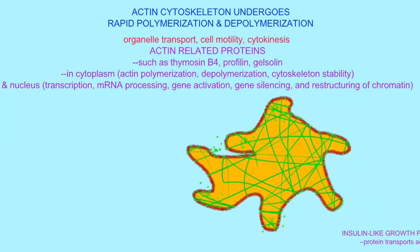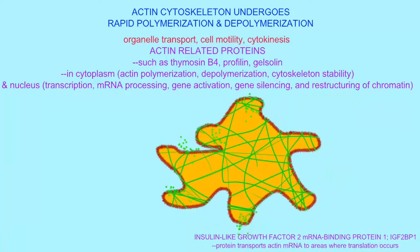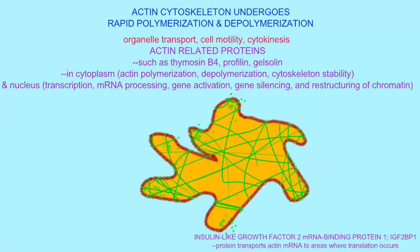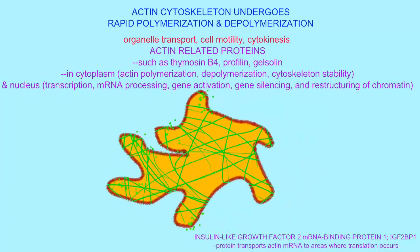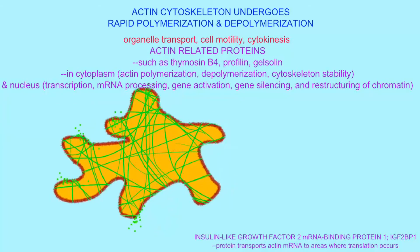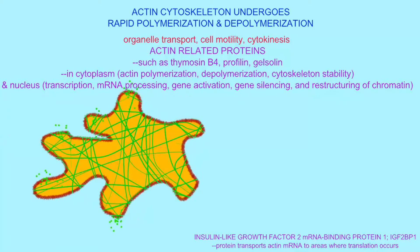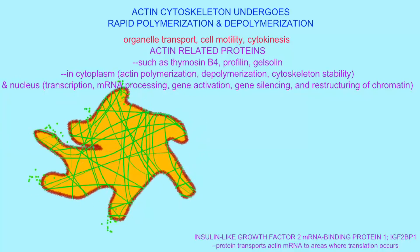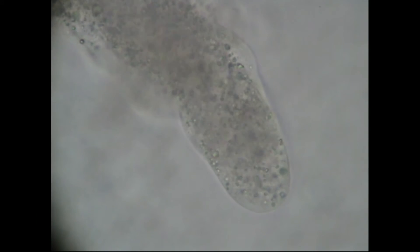Some actin-related proteins can actually transport the mRNA for actin proteins to the areas where the actin cytoskeleton is being assembled. These proteins more or less form a zip code for the mRNA, directing it to where the protein will be made in specific areas of the cell.